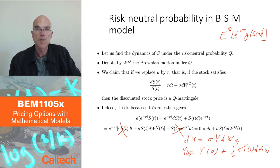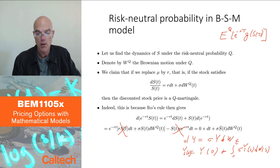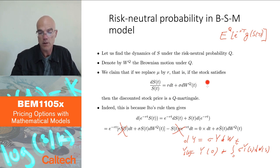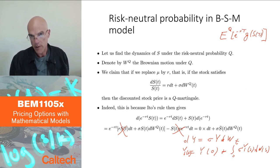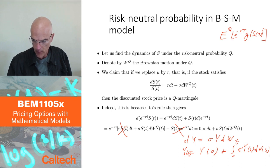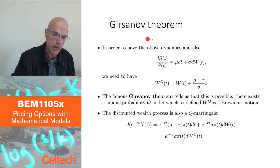The question is: does there exist a probability Q for which I can replace mu by r? The answer is yes, and in fact it is unique. This result has a name — it's a famous theorem in option pricing and stochastic processes called the Girsanov theorem.